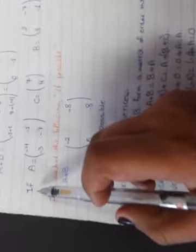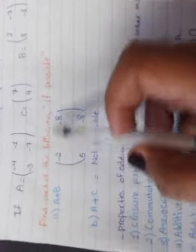Take an example, if we have A, C, and B, find each of the following, if possible. A plus B.